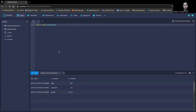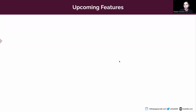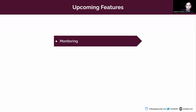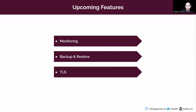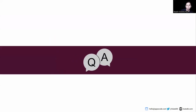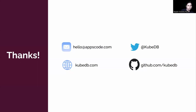You can also deploy a KubeDB-managed Apache Druid and use it. Some upcoming features: we are going to add monitoring using Prometheus and Grafana, add backup and restore in future releases, and add TLS support in upcoming features. If you have any more queries about the session, you can ask now. Thanks for joining!